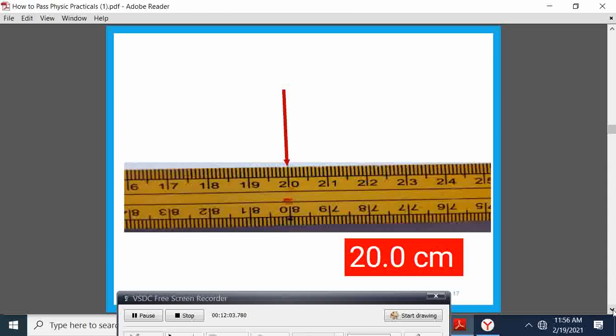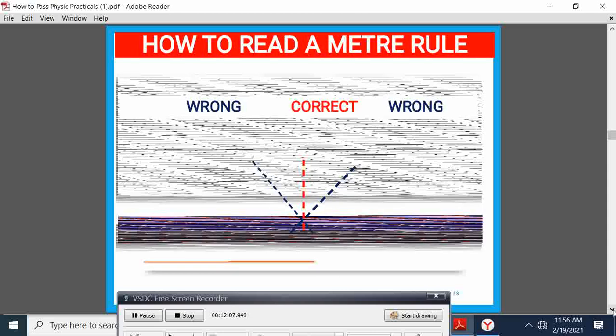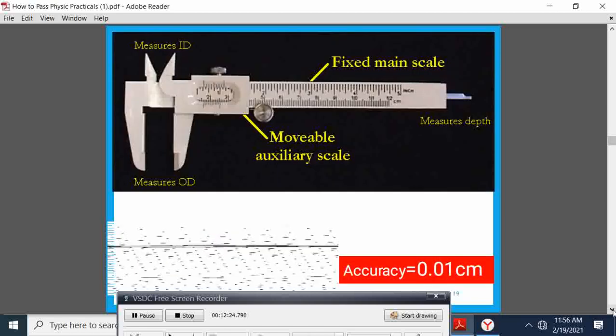Some skills we obtained at Form 1 on how to obtain the reading, how to observe and avoid the error of parallax. I am not going to emphasize that one because it is a skill. We have a Vernier caliper. It has an accuracy of 0.01 centimeters, two decimal place accuracy.